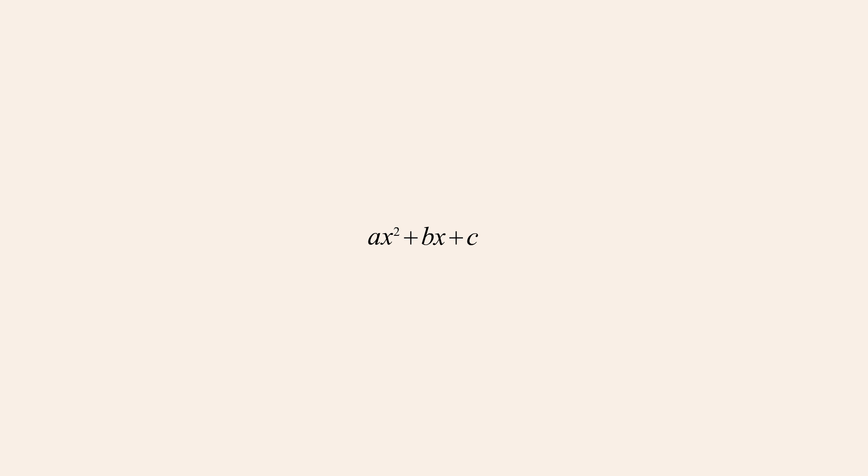Let's start with a quadratic expression written in general form ax-squared plus bx plus c. There are some simple cases when trial and error is not needed in order to factor a quadratic. For example, if a quadratic expression has no constant term, factoring it into a pair of linear expressions is straightforward, since every term will contain either x or x-squared. One linear factor will be x and the other linear factor will be the remaining expression.